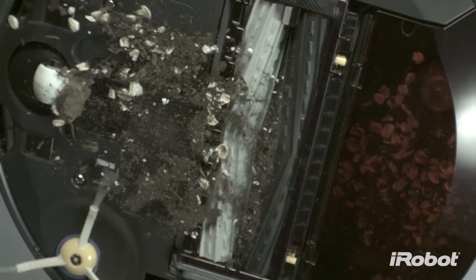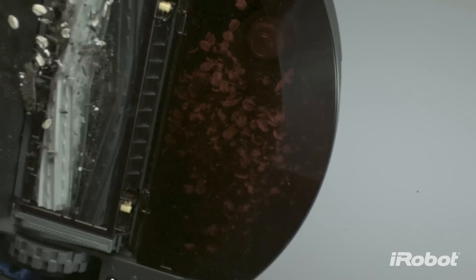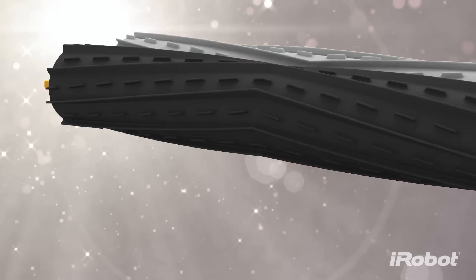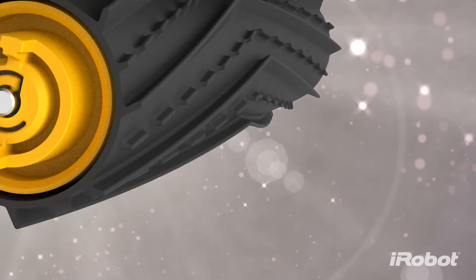It's how the Roomba 800 series cleans up to 50% more dirt, hair and debris than ever before. Dual counter-rotating extractors incorporate a durable rubber tread design that grab and break down dirt and debris from any floor type.